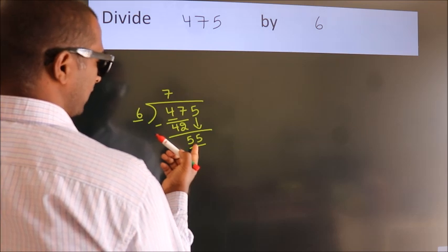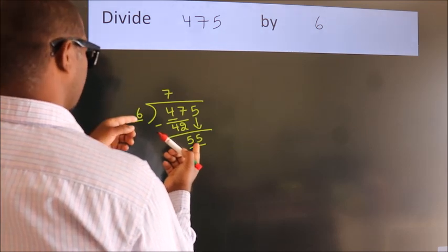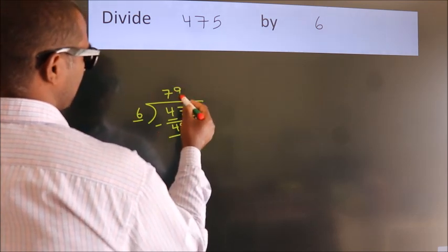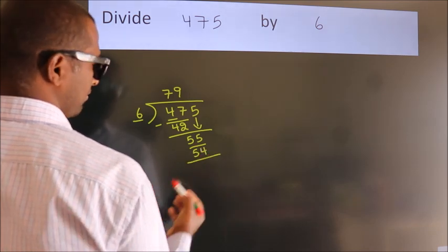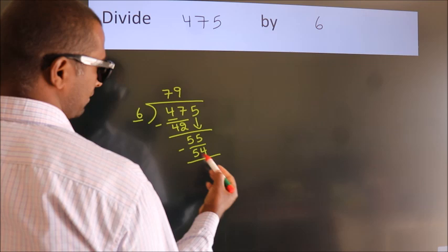A number close to 55 in the 6 table is 6 times 9, which is 54. Now we subtract. We get 1.